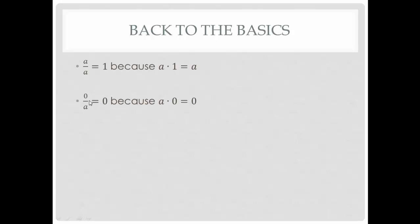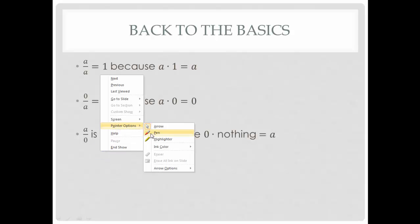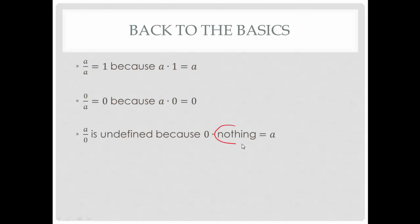The reason 0 divided by A is 0 is because A times 0 is always 0. The reason why A divided by 0 is undefined is because if you try to take 0 times something, what are you supposed to multiply it by to get it to be equal to A? That never happens. Therefore, A divided by 0 is going to come out undefined, again assuming A isn't equal to 0.